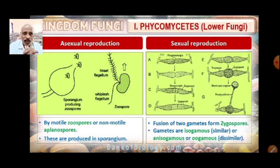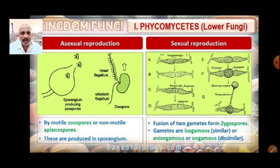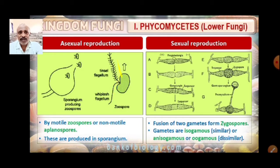Asexual reproduction in Phycomycetes takes place by the formation of zoospores or non-motile aplanospores. These spores have different cell wall types and have the capacity to withstand adverse conditions. They are produced in the sporangium, which is a fruiting body. The spores are produced within the sporangium.